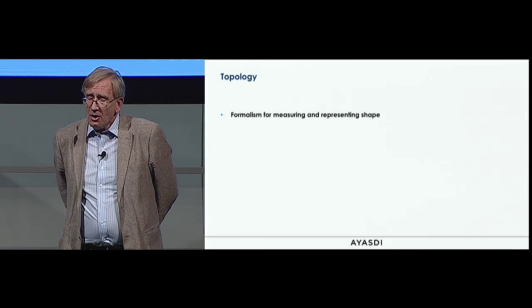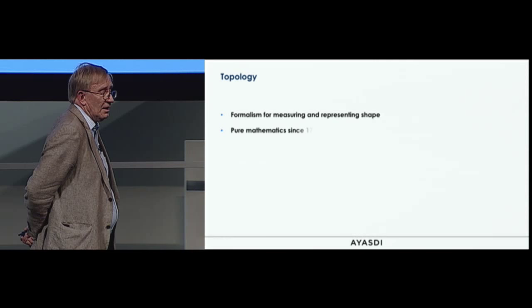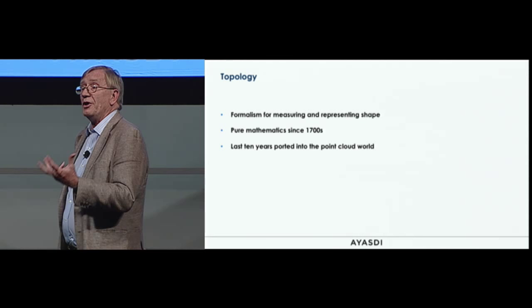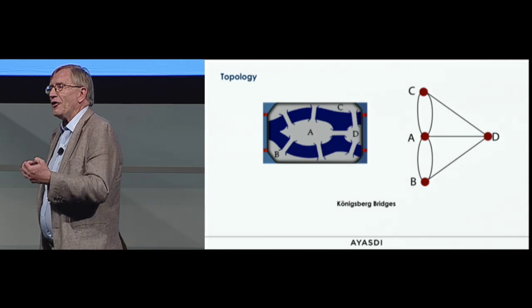Why did I call it topological data analysis? Topology is the mathematical formalism which concerns itself with measuring and representing shape. It's been part of pure math since the 1700s, but what's happened in the last 10 to 15 years is that it's been ported into what I'd call a point cloud world — the world where you have finite samples from geometric objects, finite data sets called point clouds.